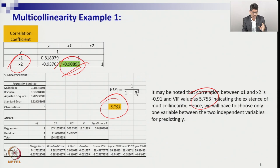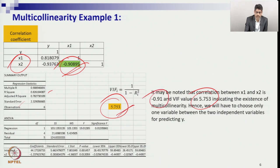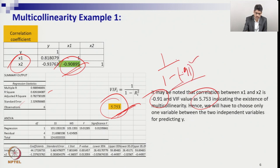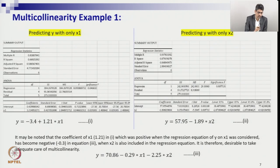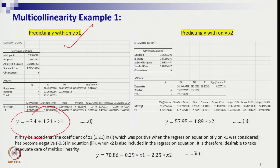We calculated the VIF and found it is 5.75, which is higher than 5, indicating moderate multicollinearity. So we cannot include both independent variables in the regression. The VIF was computed as 1 divided by (1 minus 0.91091 squared), giving approximately 5.75. We observe multicollinearity and proceed to remove it. We then took only x1 with y and then only x2 with y, running two simple linear regressions.